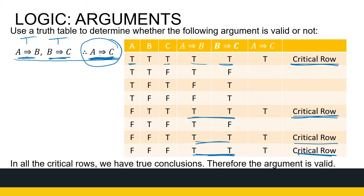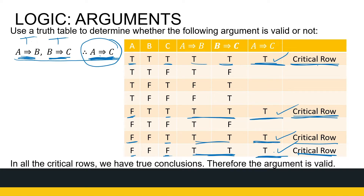A implies C in the first critical row: true implies true is true. In the next critical row: false implies true is true. This critical row: false implies true is true. False implies false is true. So I've looked at when A implies B and B implies C are both true, identified my critical rows, and checked my conclusion in those rows. If my conclusion is true in every one of those critical rows, then my argument is valid. So I can conclude that this argument is valid.